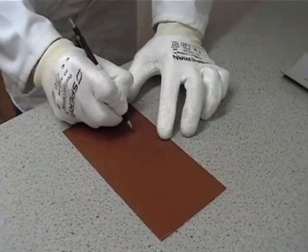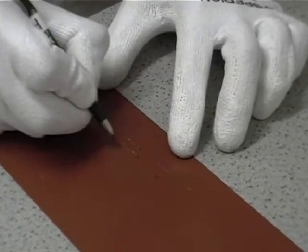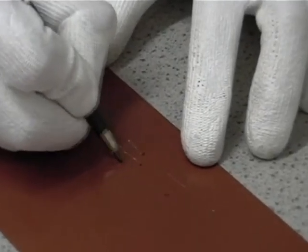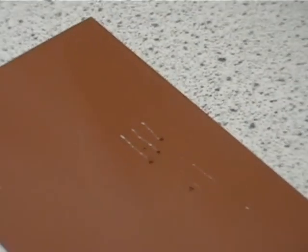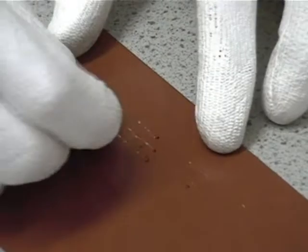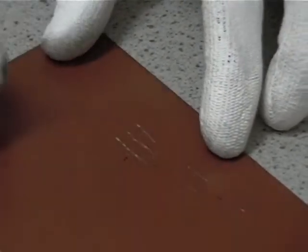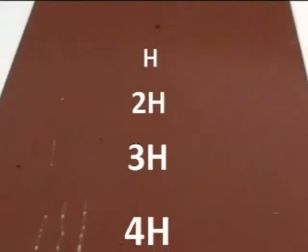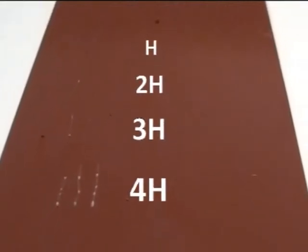A sample is deemed to have failed when a scratch of at least 3mm length is repeatably produced. In this case, although there were some marking from both the 2H and 3H pencils, it was only when using the 4H pencil that the sample failed. Hardness for this sample would be quoted as 3H, being the hardest pencil which did not cause a failure.